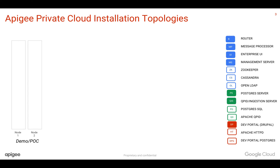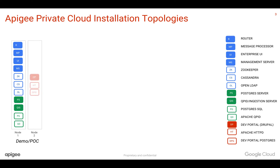For a demo installation of Apigee Edge, you need two machines — two VMs, basically two nodes — where you can install different components like router, message processor, Edge UI, management server, Zookeeper, Cassandra, OpenLDAP, as well as analytics-related software like Postgres server, Qpid injection server, and Qpid nodes on a single machine. On the other machine you're going to install the developer portal, Apache, and the developer portal Postgres database.